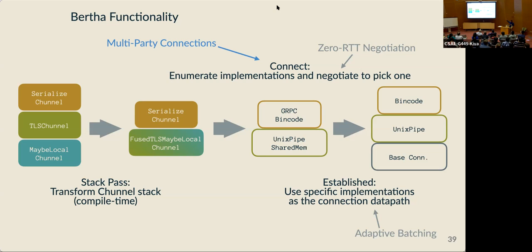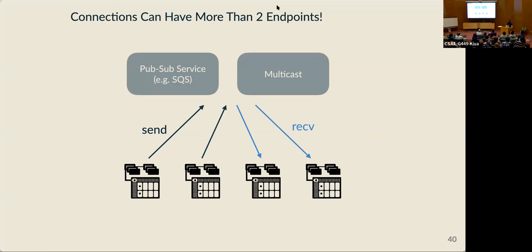I'll also discuss a way to extend what I've described to multi-party connections. While I've been explaining Bertha's core features using a traditional client-server type communication, modern applications can use multi-party communication where there are multiple senders and multiple receivers in the same connection — like multicast or cloud message queues. This connection might even be entirely asynchronous, meaning the senders and receivers might not be there at the same time. So how can we do negotiation in this case?